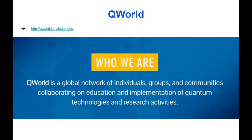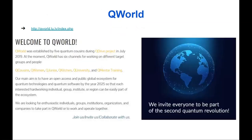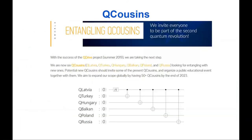QWorld is an international, supranational initiative aiming to foster research, collaboration, and education in quantum technologies. I invite you to visit our website. We have several channels and projects. One of the most important is QZINs — different local organizations in different countries that are partners of QWorld, responsible for organizing events and workshops. Currently we have six QZINs in Latvia, Turkey, Hungary, the Balkans/Bosnia, Poland, and Russia. We aim to expand globally to more than 50 QZINs by the end of 2023. Three most important keywords: supranational — engaging every country; diversity — engaging more women and young people.